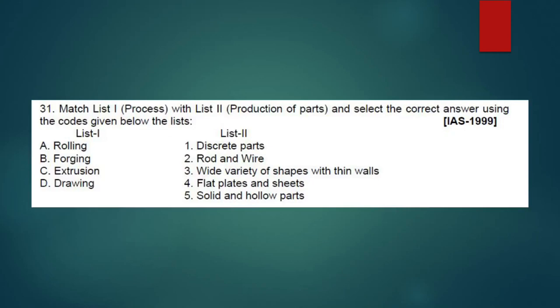Matching question, List 1 and List 2. A is rolling - rolling for flat sheets, slits and plates. Then forging - discrete parts. Then extrusion - we are doing drawing for rod and wire. Then extrusion - solid and hollow parts. A for 4, B1, C5, D2.